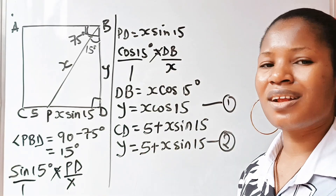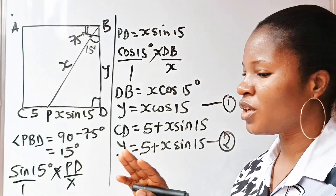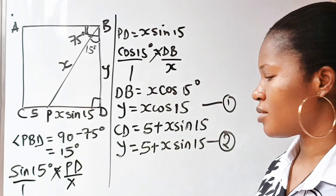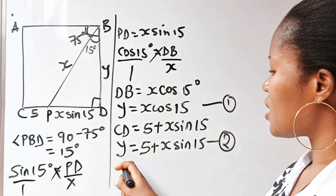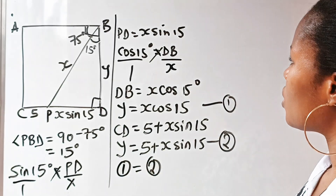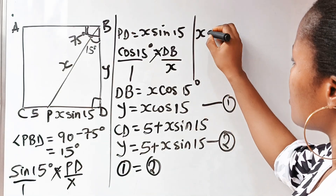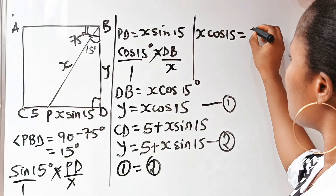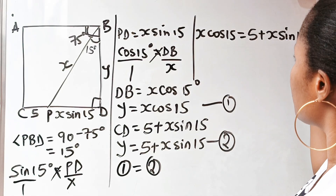Remember, you are not asked to use the calculator — the calculator is not allowed. So we are going to use trigonometric ratios to find every single thing here. X·cos 15 is equal to 5 plus X·sine 15.